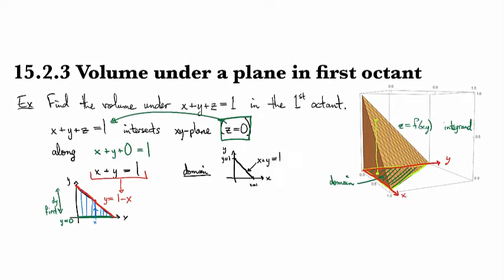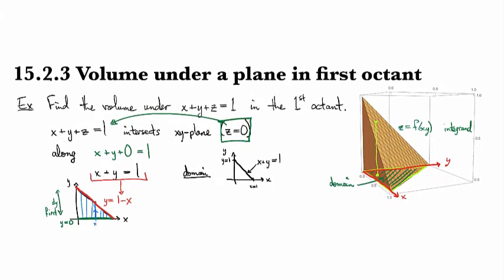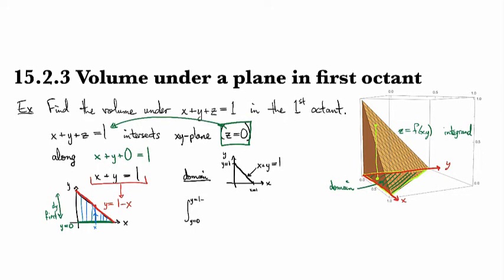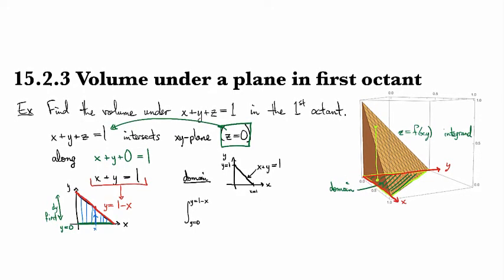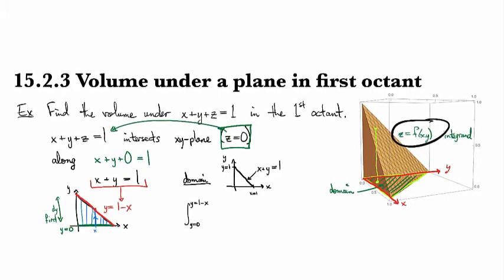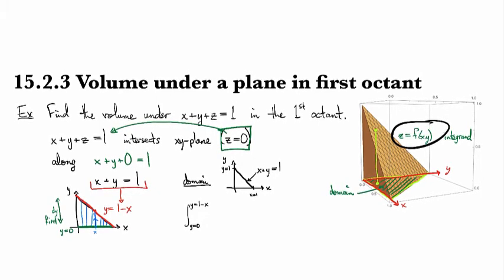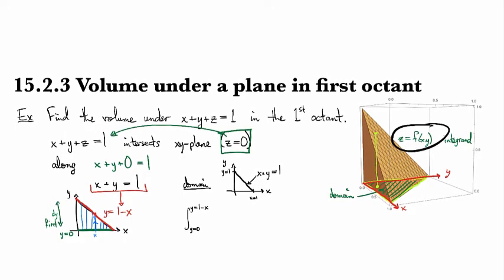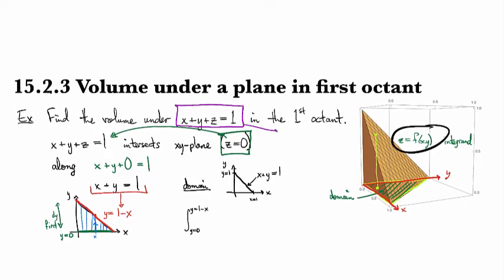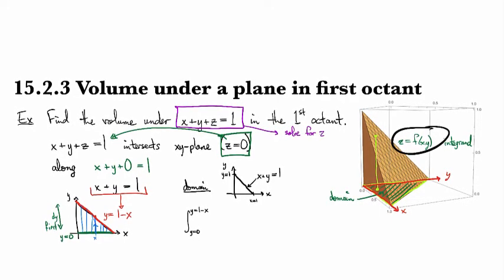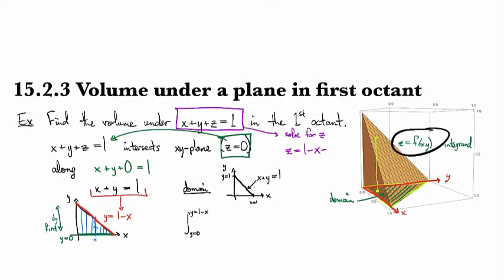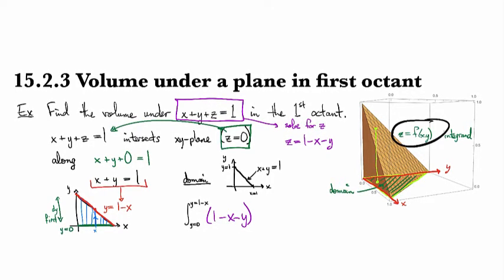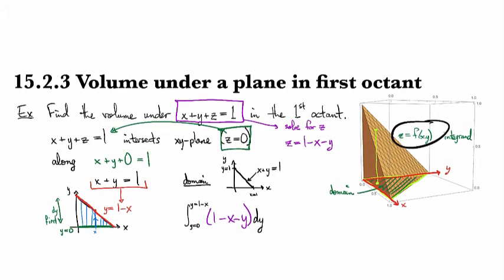Our domain goes from y equals 0 up to y equals 1 minus x. For the integrand, we go back to the 3D picture — that's what we get by solving the equation of this diagonal plane for z. So we say: take the surface x plus y plus z equals one, solve for z, and we get z equals 1 minus x minus y. That's going to be our integrand: 1 minus x minus y.